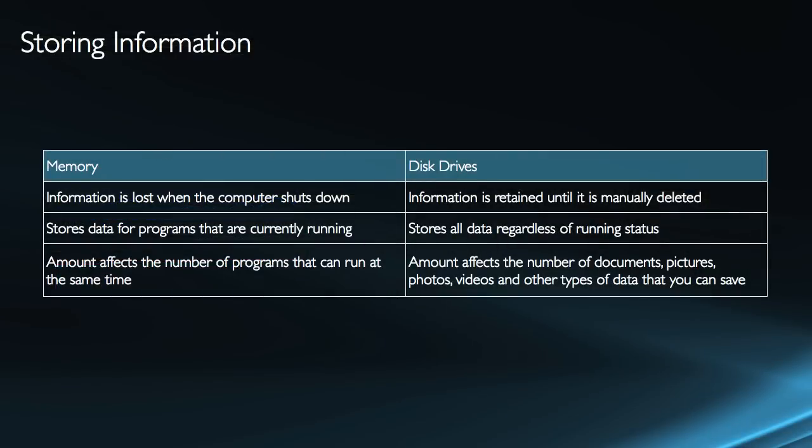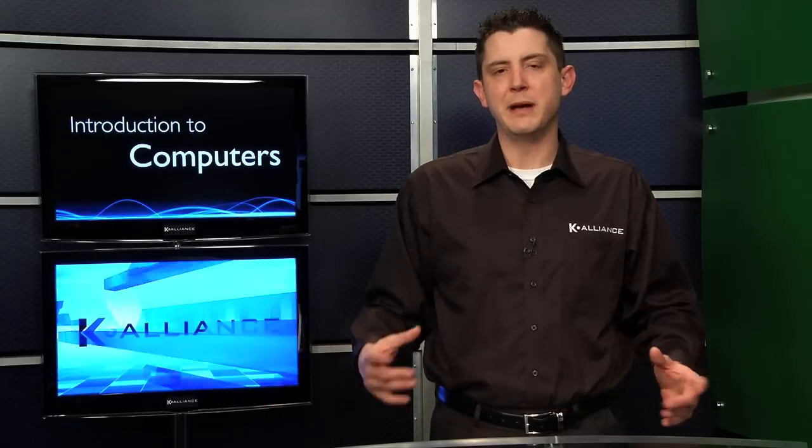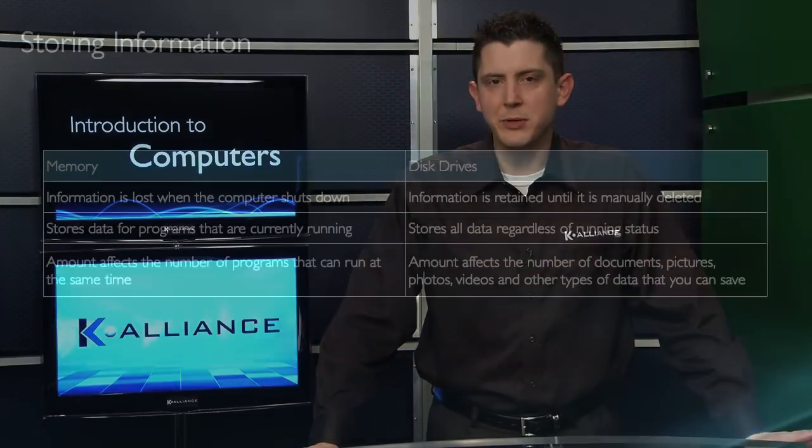The disk drive is the primary permanent storage. Let's compare memory and disk drives. We often get the false idea that more memory means more information can be saved, but that's not true given how memory is used versus a disk drive. Memory is not permanent — the information is lost when the computer shuts down. When you do a reboot or restart, you lose all of that information. If you had a Word document open and hadn't saved it, that information will be gone if you restart without saving.